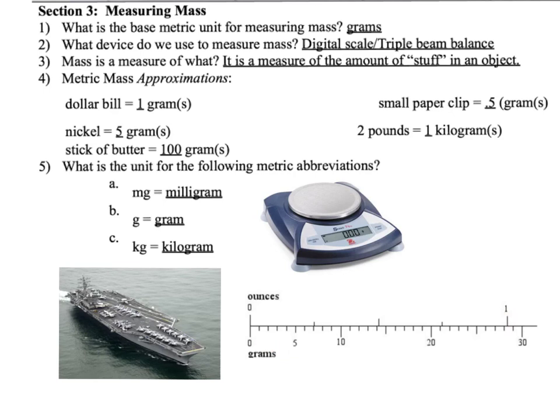Again, the abbreviations follow the same pattern every other unit does. Base unit is grams. A thousandth of a gram is known as a milligram. And if you add a thousand grams together, you would have one kilogram. Now my question for you is which unit of measure would be the best choice for measuring the mass of that object.